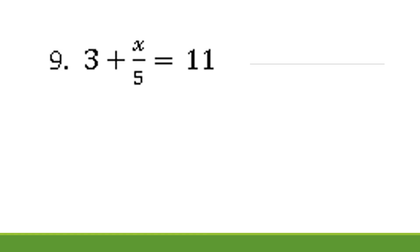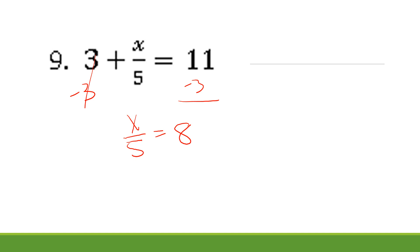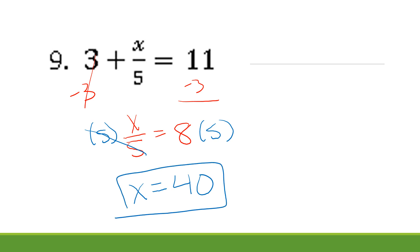What are we going to do first for number 9? If we said we're moving our loose number — what's the loose number? The 3. It's a positive 3. So how am I going to move positive 3 to the other side? Subtract it, because 3 minus 3 is 0. That takes it away and moves it to the other side. We're left with X over 5 equals 11 minus 3, which is 8. Now I have X divided by 5, so to undo divide by 5, we multiply both sides by 5. X equals 8 times 5, which is 40. Number 9 gives you x equals 40.